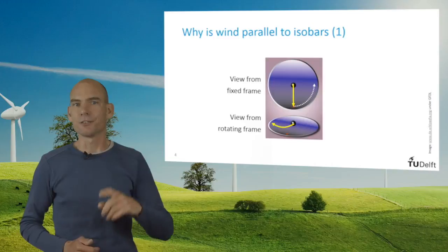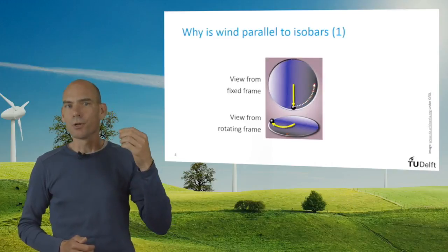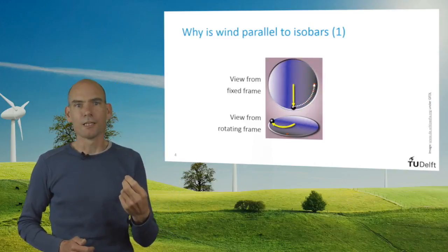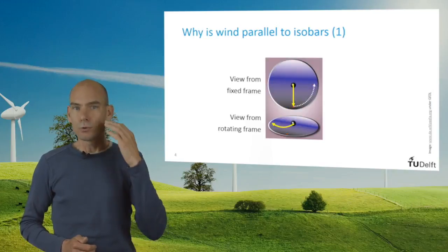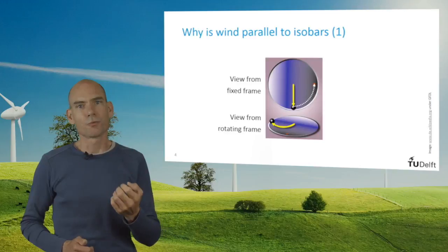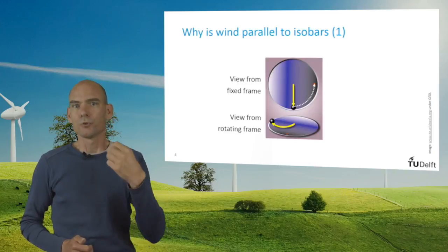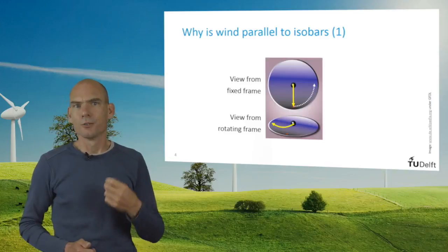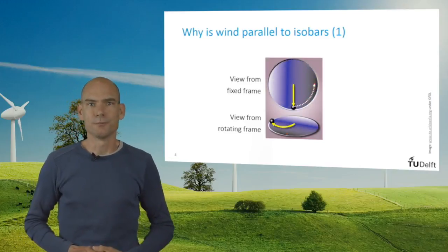Let's have a look at this rotating disc and a ball that is moving along a straight line in a fixed frame of reference. If we would look at the motion of this ball from a frame of reference that is fixed to the disc, it would appear to be curved to the right. You can see this in the lower part of the image.